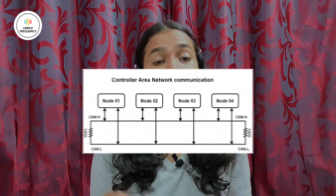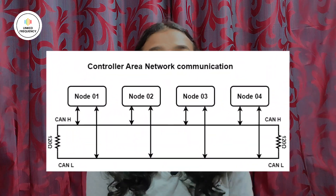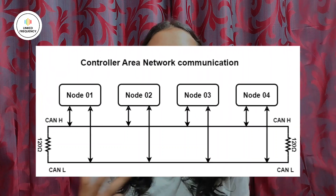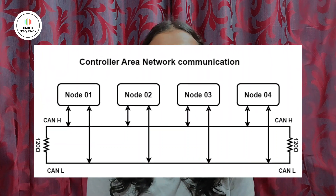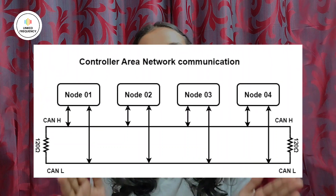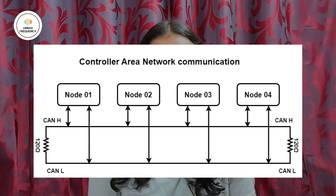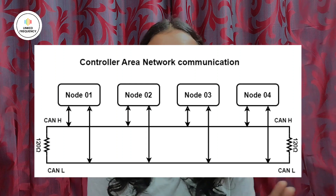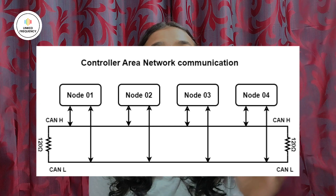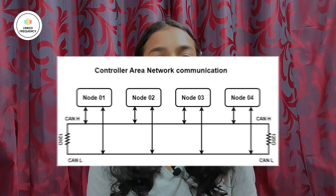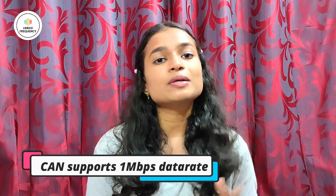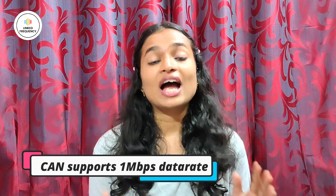CAN nodes are connected by a two-wire — that is CAN High and CAN Low — twisted pair cables that are terminated with 120 ohm resistance at both ends to avoid signal reflection. The representation on the screen shows that 120 ohm resistance is connected at both ends. CAN supports a data rate of 1 Mbps at a 40 meter bus length, and the message transmission is asynchronous.